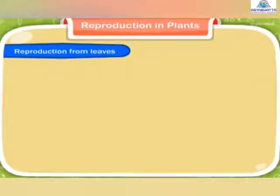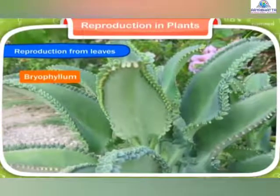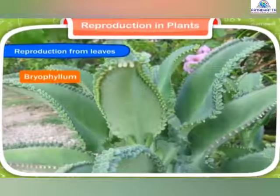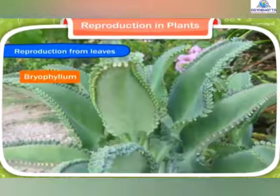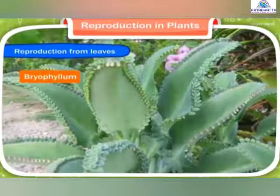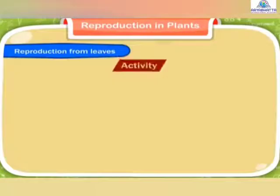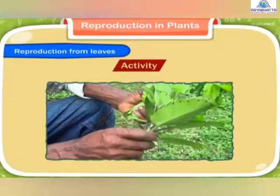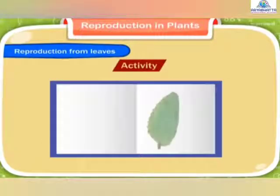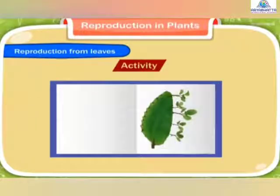Reproduction from leaves. Some plants like the bryophyllum have fleshy and thick leaves bearing buds on their edges. These buds on the edges of the leaves grow as new plants. When leaves fall down on the ground, the buds start growing. Activity: Pluck a bryophyllum leaf and place it in between the pages of a book. If you see it after two to three days, you will find several new plants growing from the buds all along the edges.